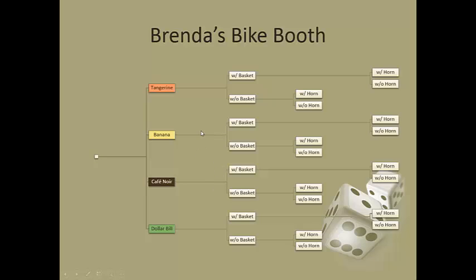For Brenda's bike booth could have chosen tangerine, banana, cafe noire, or dollar bill. This is the type of problem a lot of statistic texts like because the two options for the basket are with the basket or without the basket. So you do have two choices there. So do look for those scenarios where you can have with or without something.